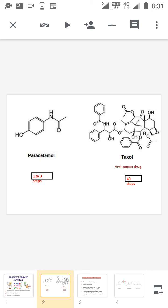For example, paracetamol. Everybody knows paracetamol. Paracetamol requires 1 to 3 steps depending upon the starting material. And taxol, taxol is an anti-cancer drug. It requires 40 steps to prepare. This is a natural product having complex structure.